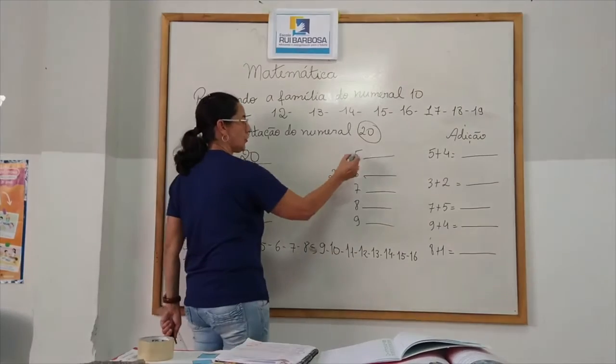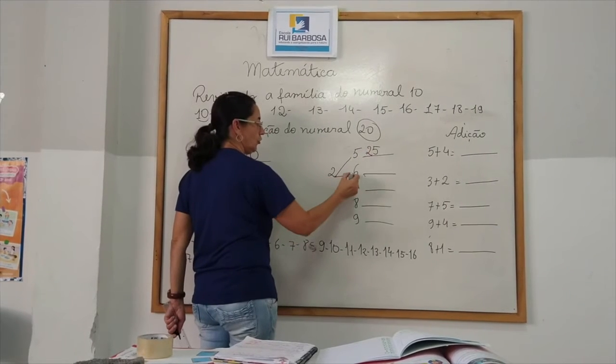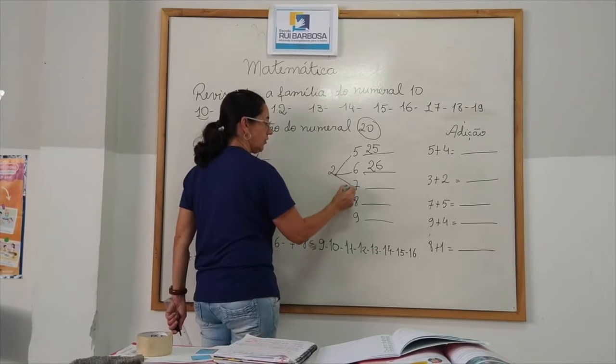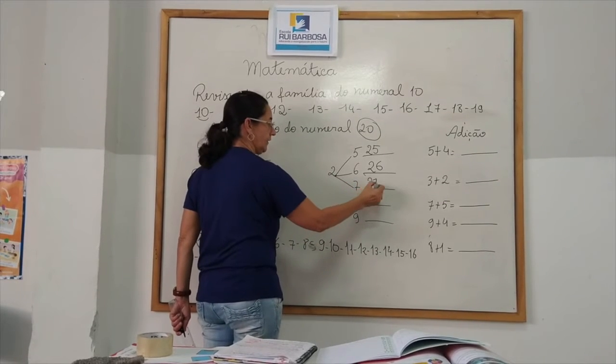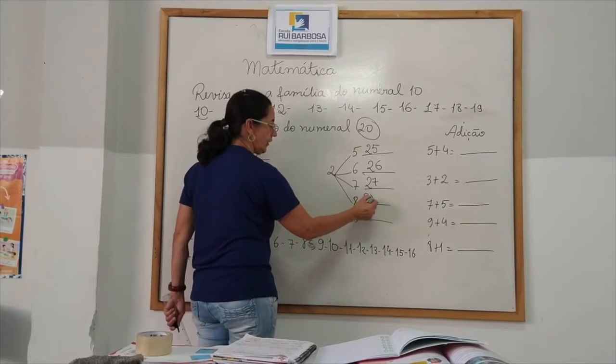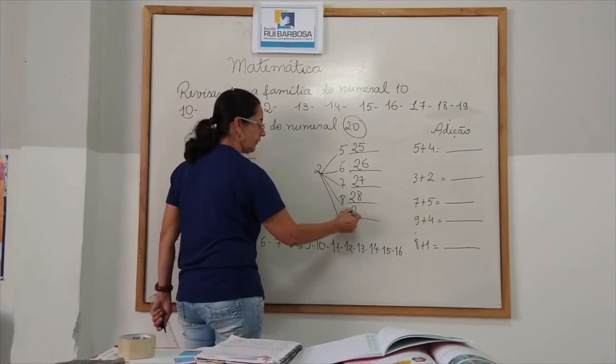Dois, juntou com 5, 25. Dois, juntou com 6, 26. Dois, juntou com 7, 27. Dois, juntou com 8, 28. Dois, juntou com 9, 29.